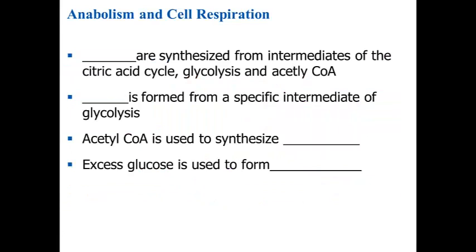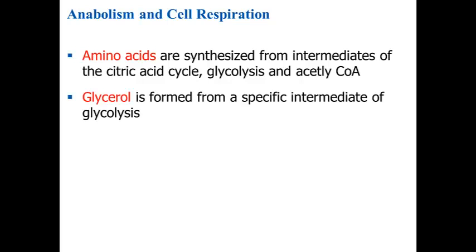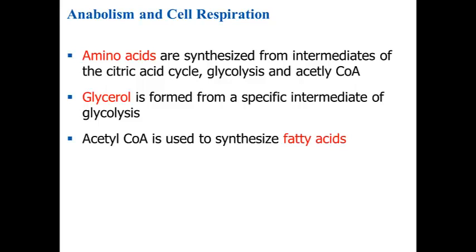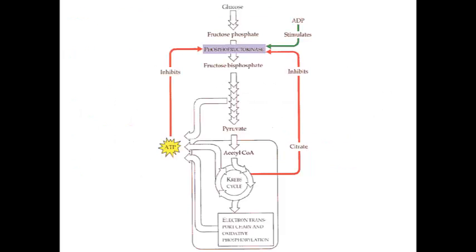Let's review what we've seen so far. Amino acids are synthesized from intermediates of the citric acid cycle, glycolysis, and acetyl-CoA. Glycerol is formed from specific intermediates of glycolysis. Acetyl-CoA is used to synthesize fatty acids. Excess glucose is used to form carbohydrates. And here is our feedback inhibition pathway.